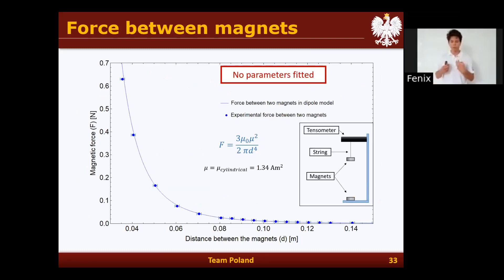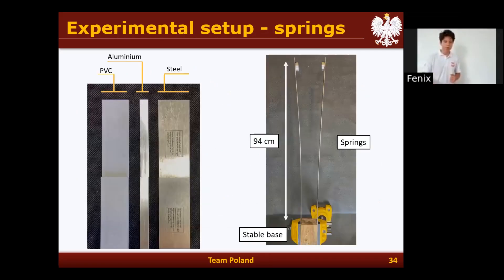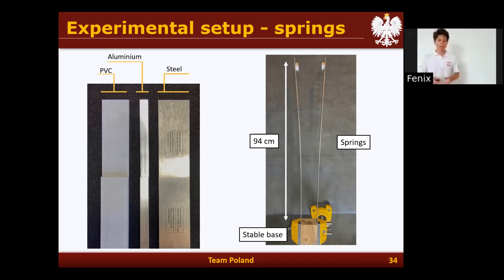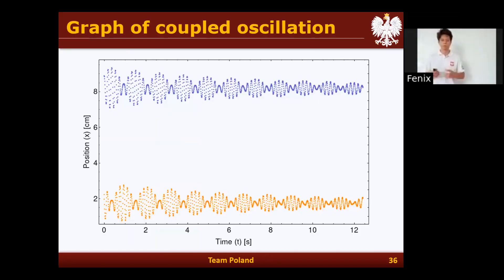To verify this magnetization value, we made an independent measurement by measuring the force between the magnets for different distances, and found we can very accurately predict this force as a function of distance. For our frequency experiments, we used three different beams: the steel beam, which is paramagnetic; the aluminum beam, which is non-paramagnetic; and the plastic beam. We attached all of them to the table base and used different magnets with different magnetic dipole moments and different masses. Here is a sample graph of the oscillations.